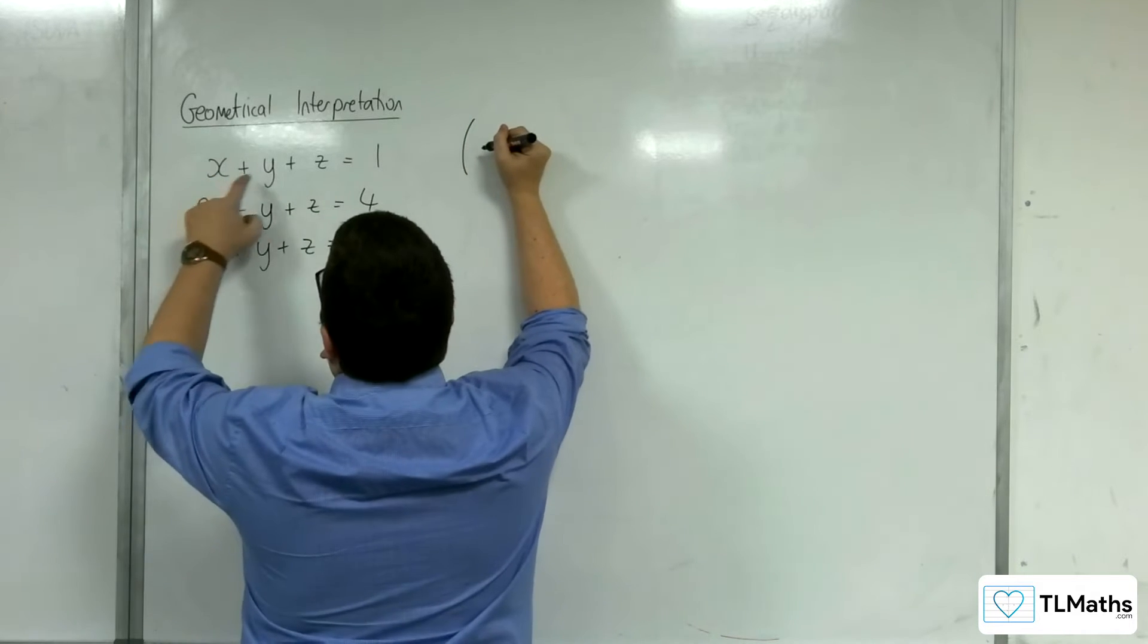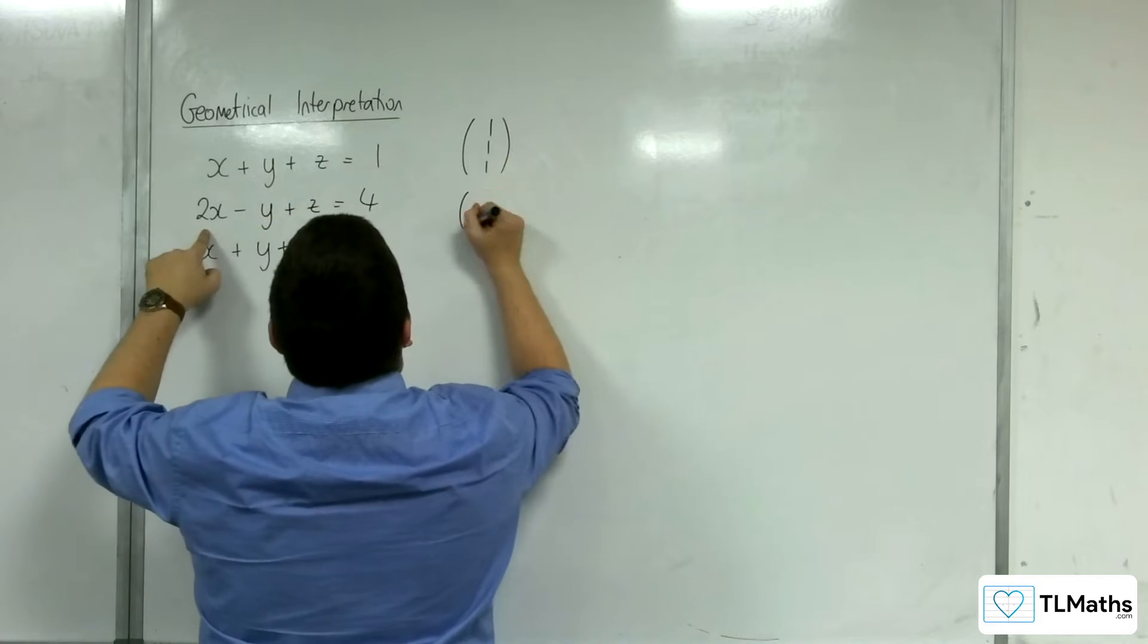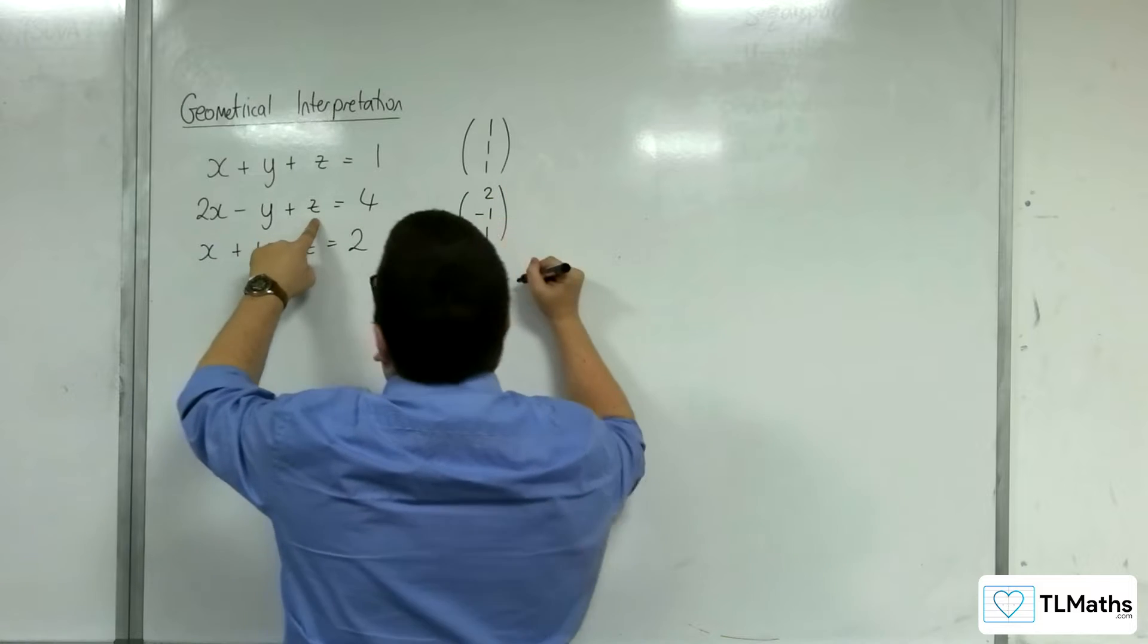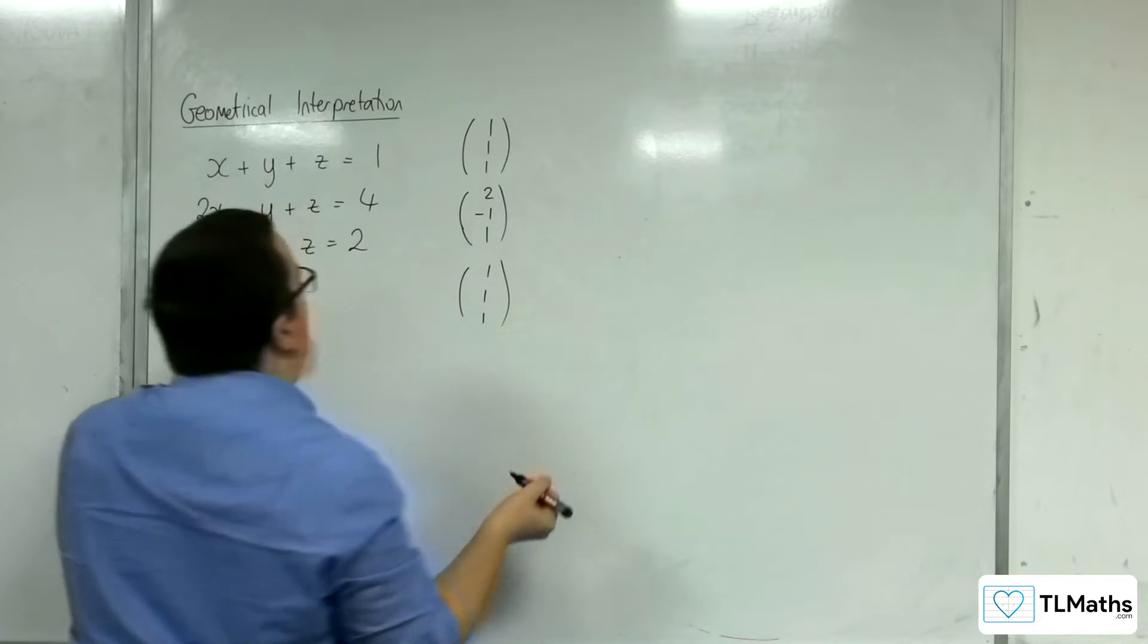Let's have a look at the normal vectors. So we've got 1, 1, 1 for the first one. We've got 2, minus 1, 1 for the second one. And we've got 1, 1, 1 for the third one.